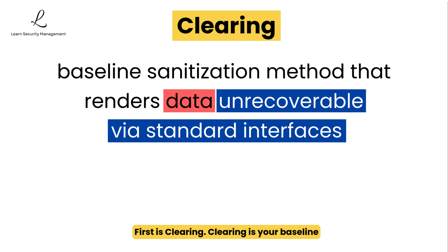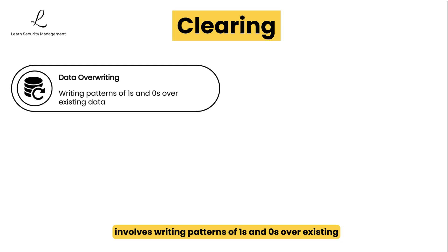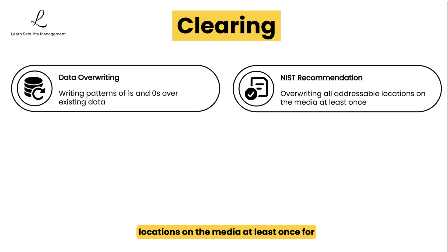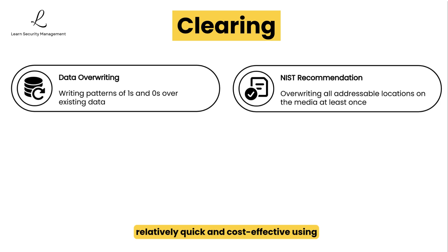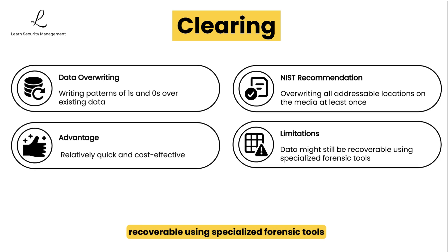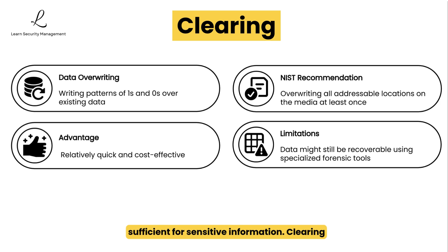First is clearing. Clearing is your baseline sanitization method that renders data unrecoverable via standard interfaces. This involves writing patterns of ones and zeros over existing data, making it inaccessible through normal file system operations. NIST specifically recommends overwriting all addressable locations on the media at least once for the clearing method to be effective. While it is relatively quick and cost-effective using freely available software tools, the data might still be recoverable using specialized forensic tools or advanced recovery techniques.